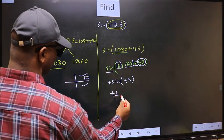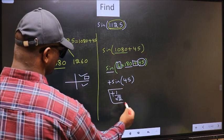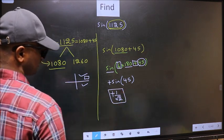Plus sin(45) is 1/√2. This is our answer.